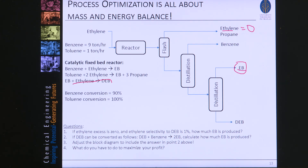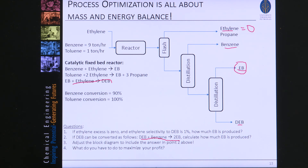The second question is: if the diethyl benzene can be converted by reacting it with benzene to make 2 ethyl benzene, calculate how much new ethyl benzene is produced. Question three: adjust the block diagram to include the answer from point two. And the last question — more of an open question — is: what do we have to do to maximize the profit in this case? Please do it on your own and submit the answer to me. This is the end of the first session.